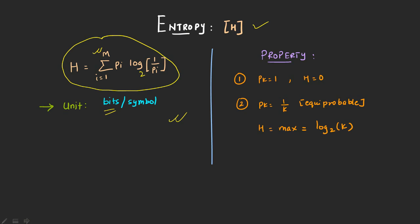From the unit you can understand how many bits are present in one symbol. For example, if I am writing 1 in 4-bit format it would be 0000, and if I am writing 16 in 4-bit format this would be 1111. So if I am passing 16 as a symbol I require 4 bits — 4 bits for 1 symbol. This is the unit and this is how you have to understand.